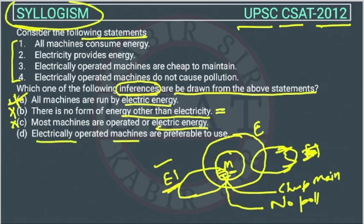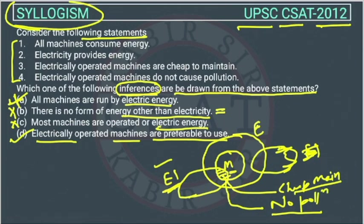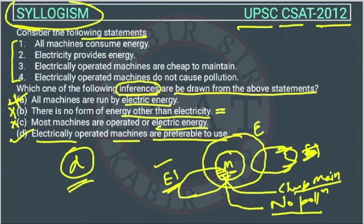Option D: electrically operated machines are preferable to use. Since we have to find the inference, this is the valid possibility. Because in the statements, these machines have cheap maintenance and there is also no pollution — that's why they will be preferable to use. So the answer to this question is Option D. This is the only inference we can draw from these statements, because all others are wrong.